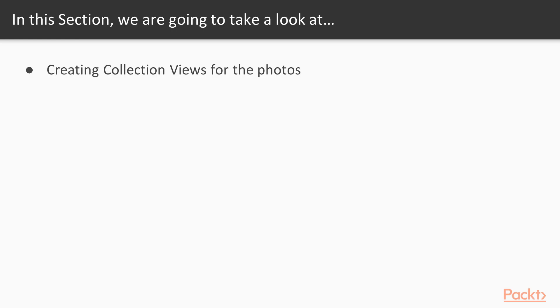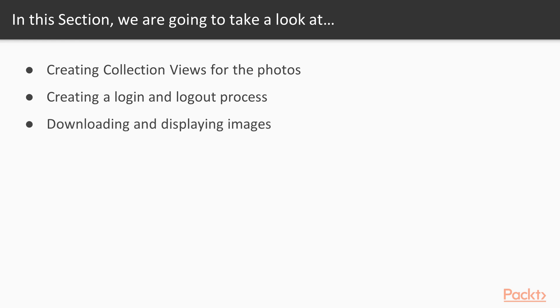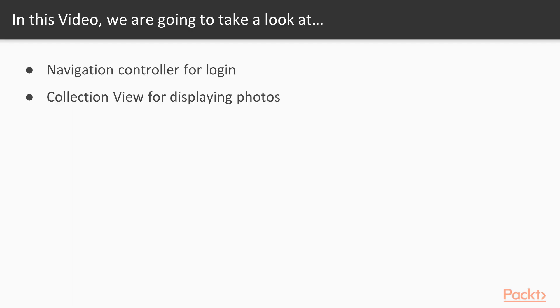So what is it that we're going to be covering in this section? First, we're going to be creating collection views so that we can display these photos in a really nice way. Next, we're going to be creating a login and logout process. We've already started down that road, but we're just going to keep doing that. Next, we are going to be downloading and displaying some images. And then finally, we want to make it so that we can open tweets in the appropriate way — meaning that if the user's Twitter app is on the phone, they can just jump straight to the app and look at that individual tweet, and if not, they could open up a web browser. So let's go ahead and get things started off with the design.